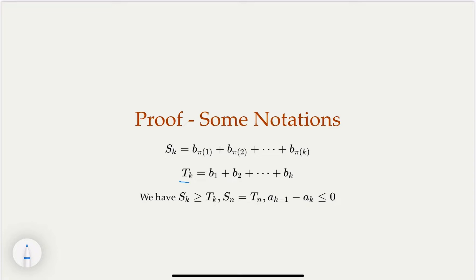Of course T_k would be smaller than S_k because S_k is the sum of k terms not necessarily in sorted order. So we have S_k greater or equal to T_k. However, when k equals n, if you have all elements and sum them together, these two must equal each other. So we have S_n equals T_n. Another thing to notice is a_n is also in increasing order, which means a_{k-1} is smaller than a_k. The difference would be a negative number here.